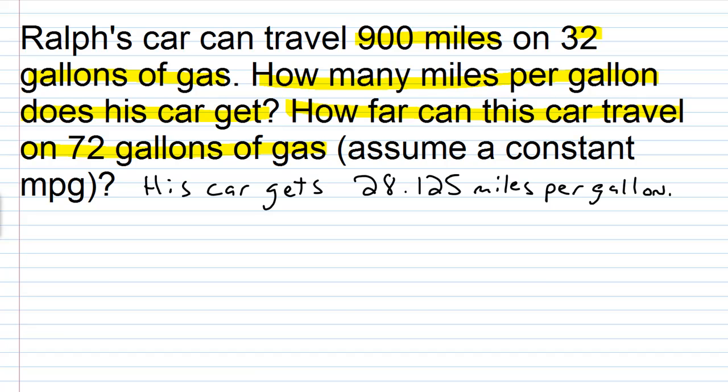If your car gets 10 miles to the gallon and you have 4 gallons of gas, well, you know you can go 40 miles, right? 10 times 4. So no different here. We're just going to do 28.125 times 72. So to do this, I'm going to ignore the decimal here and then we'll deal with the decimal after we're done with our multiplication. We'll just work with the whole numbers right now.